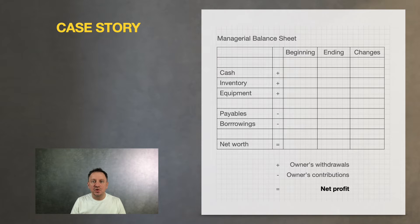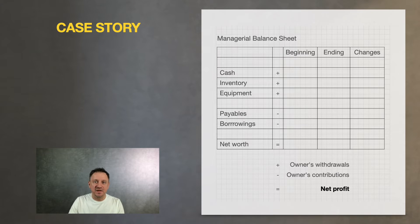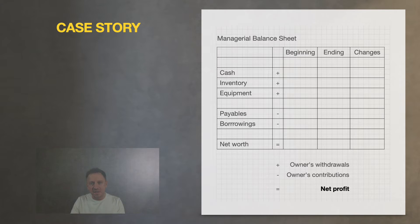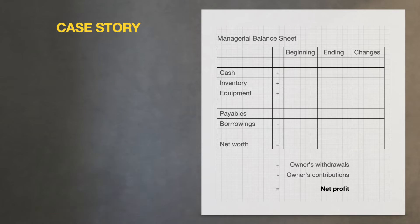Now his business began to grow. He is actively buying new equipment, opening new restaurants. He is borrowing and sometimes struggling with free cash. He happened to take out some dividends for himself, but sometimes he was forced to return some money back again. And of course, now he was wondering about his real net profit.